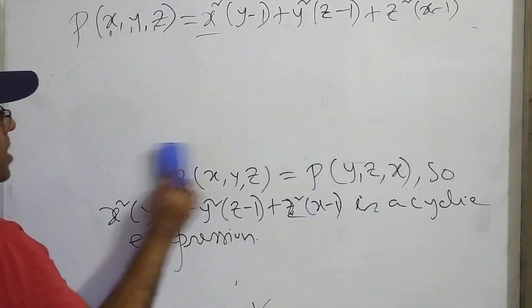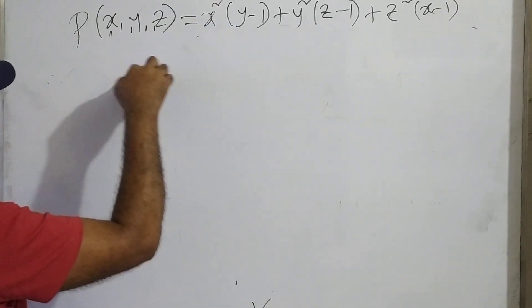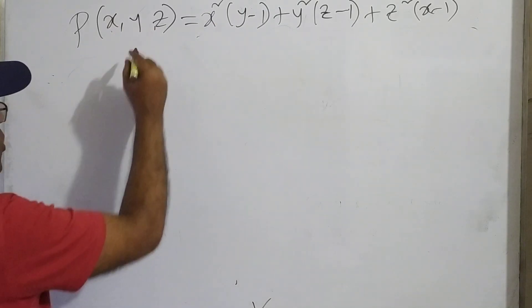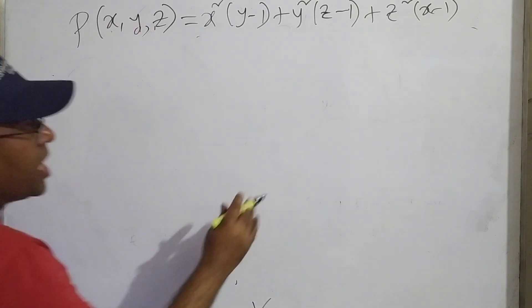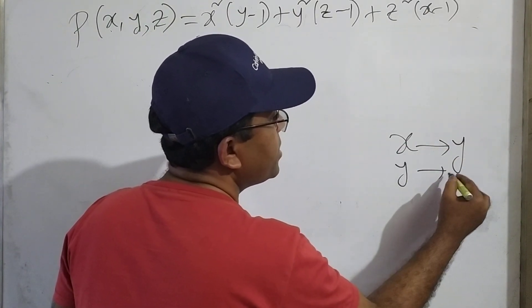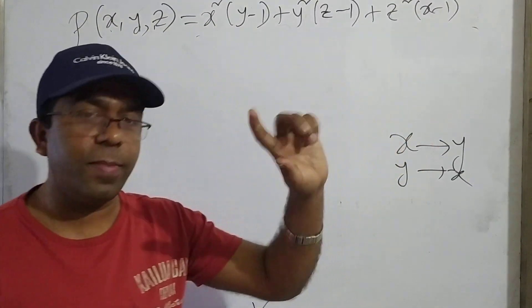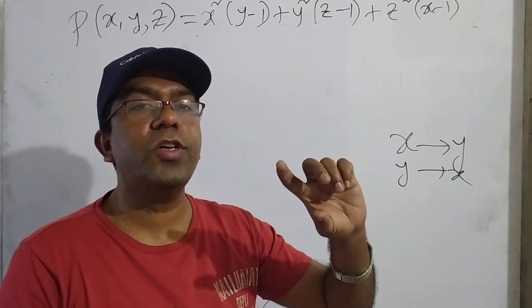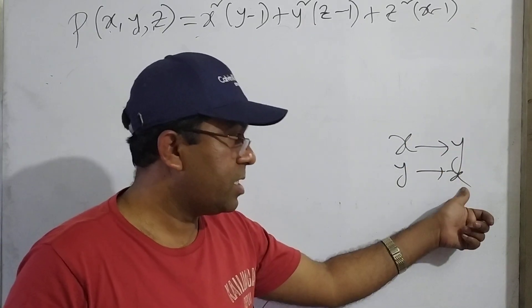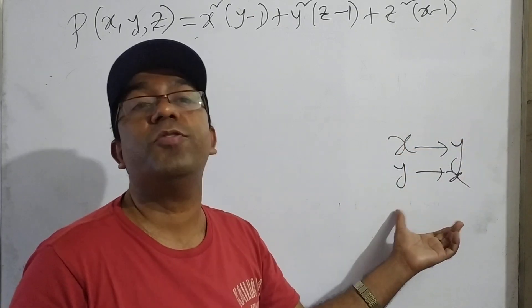Now let us check if it is a symmetric expression. Symmetric expression means interchange of any two variables leaves the expression unchanged. If we interchange any two variables — for example, x is changed to y and y is changed to x, while z stays unchanged — the expression should remain the same. X is replaced by y and y is replaced by x.